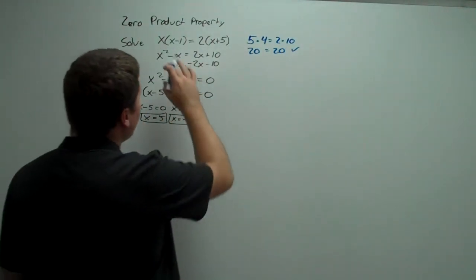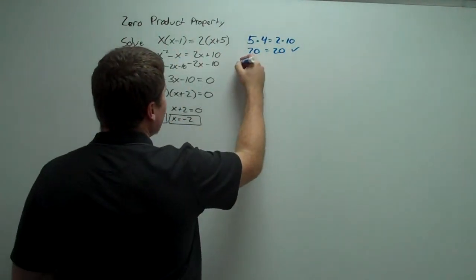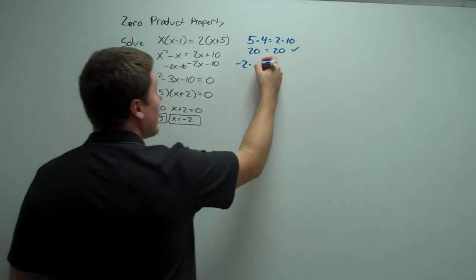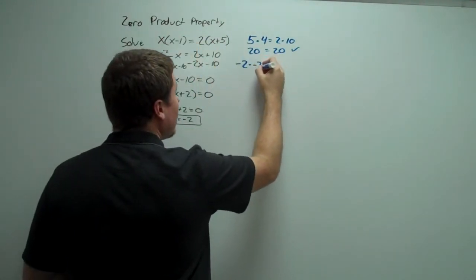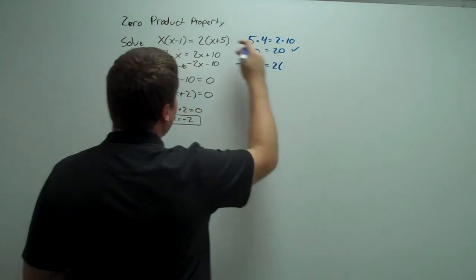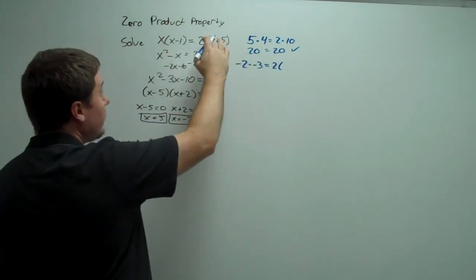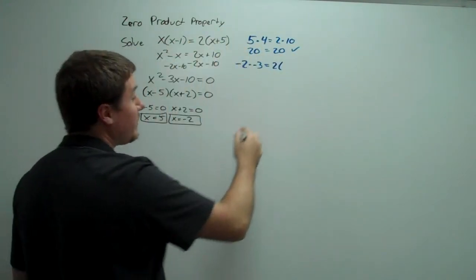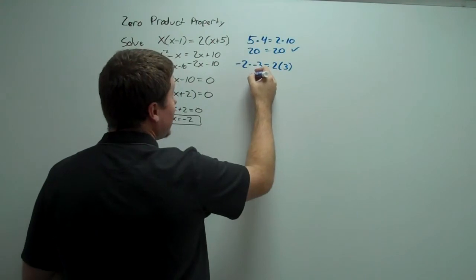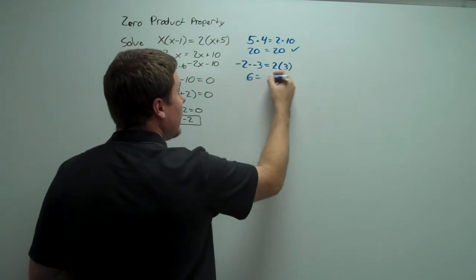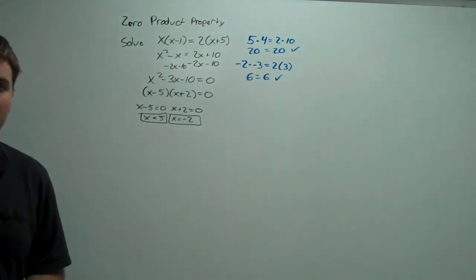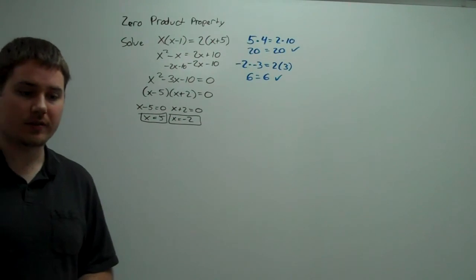How about negative 2? Negative 2 times negative 2 minus 1, which is negative 3, is equal to 2 times negative 2 plus 5, which is positive 3. So this is going to be positive 6, and this is going to be positive 6. So both answers are, in fact, solutions.